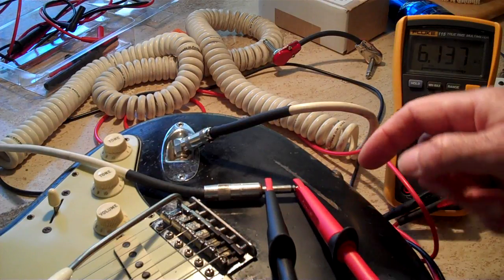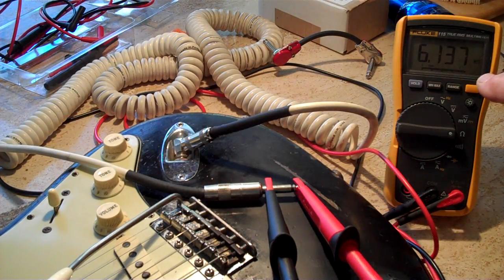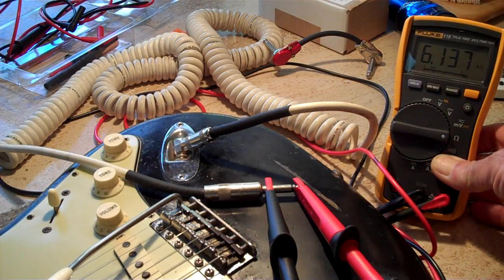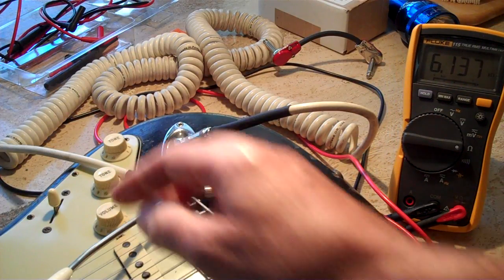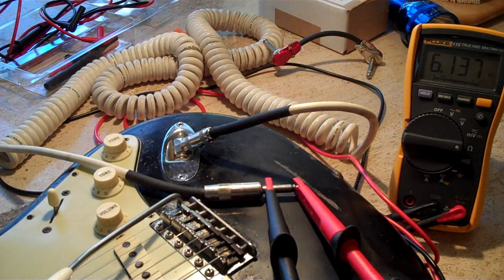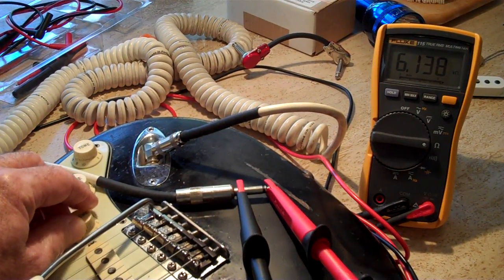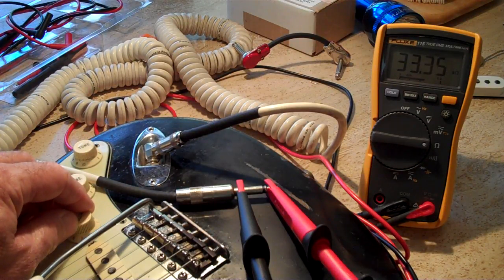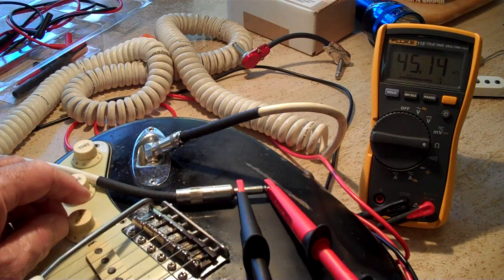You just take the other end, put your lead on—the tip is the hot, the black is the ground, that's the sleeve. You just hook them on there. Now you're getting a reading over here. You can see hopefully that it's 6.137, and that's the middle pickup.